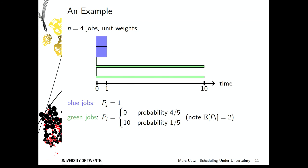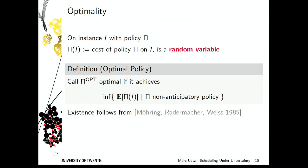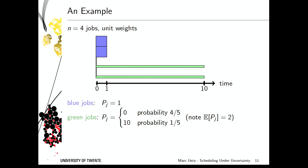Let me go through a small example. We have four jobs: two deterministic blue jobs with processing time 1, and two stochastic green jobs that disappear with probability 4/5 or turn out to be very long with probability 1/5 — their expected processing time is 2. All weights are 1, so we want to minimize the total expected completion time. Suppose you want to schedule these four jobs on two machines — which goes first, blue or green?